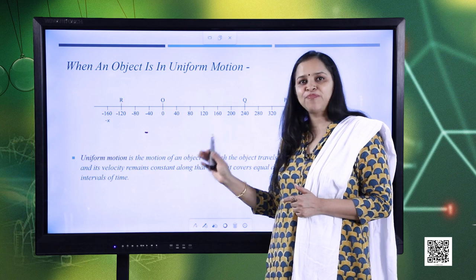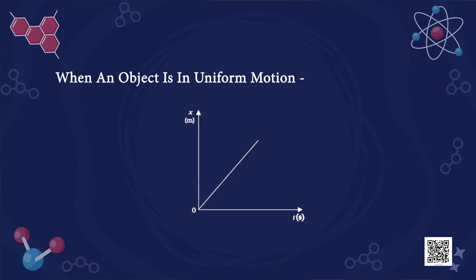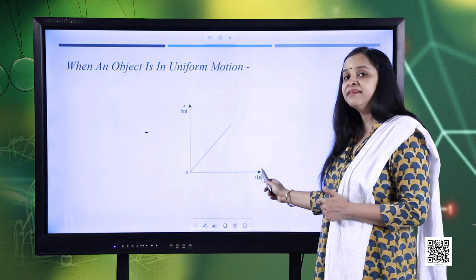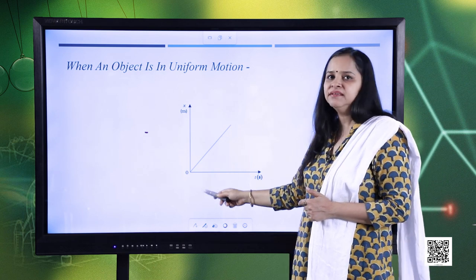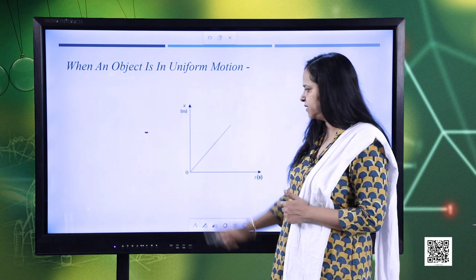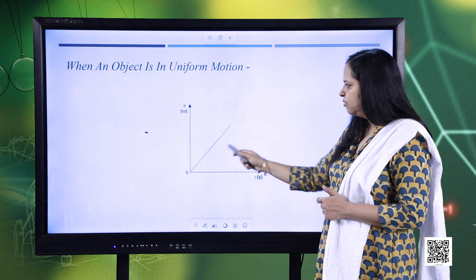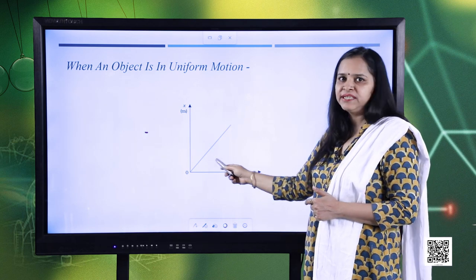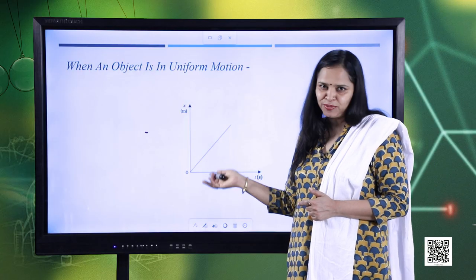Now let us see how to plot the position-time graph for uniform motion. Along the x-axis we consider time as the independent factor, and along the y-axis we consider the position of the moving object. Since the particle travels equal distance in equal intervals of time, we get a straight line inclined to the time axis. That is how we plot a position-time graph for a body having uniform motion.